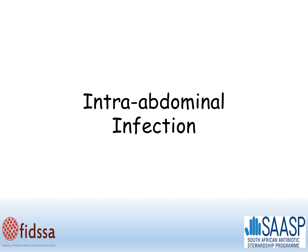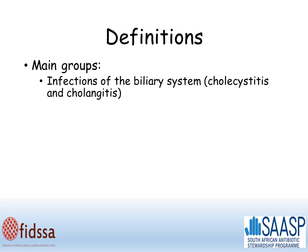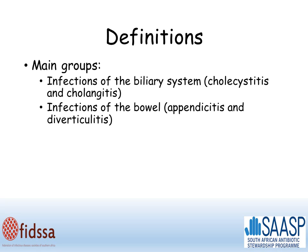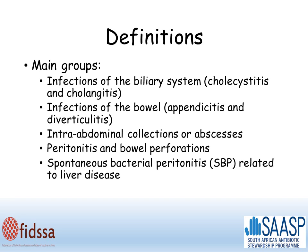This lecture is about intra-abdominal infection. The main groups are infections of the biliary system, such as cholecystitis and cholangitis; infection of the bowel itself, such as appendicitis and diverticulitis; intra-abdominal collections or abscesses; peritonitis and bowel perforations; and spontaneous bacterial peritonitis (SBP), which is related to chronic liver disease.